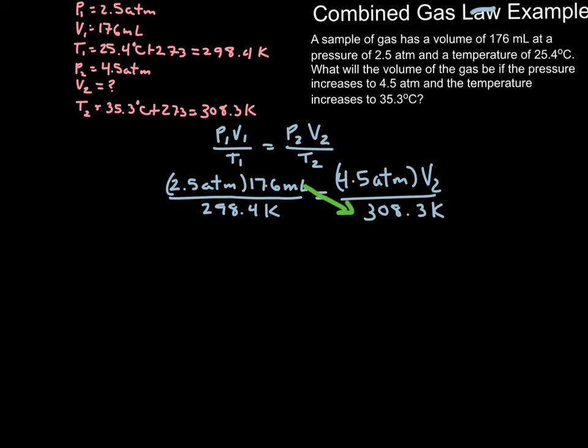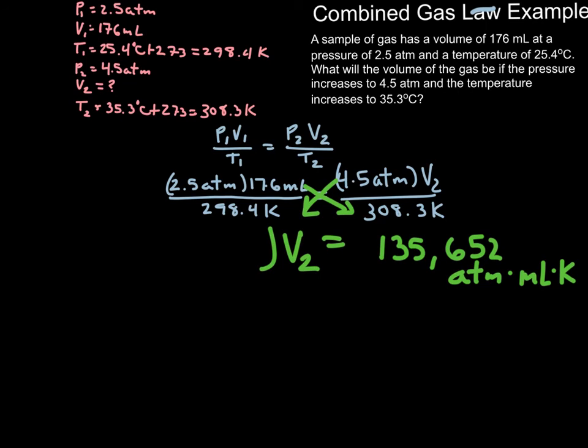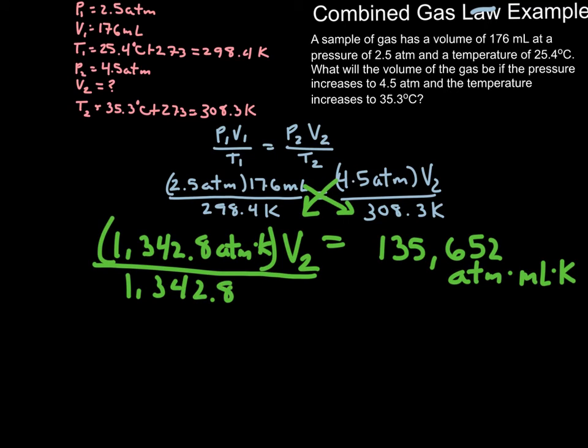So when we cross-multiply here, we get 2.5 atmospheres times 176 milliliters times 308.3 Kelvin, and that is equal to 135,652, but you have to include all of your units. So we're at atmospheres times milliliters times Kelvin. When we cross-multiply the other way, we still have our V2, and 4.5 atmospheres times 298 Kelvin gives us 1,342.8 atmospheres times Kelvin. Now we have to divide by that. 1,342.8 atmospheres times Kelvin, 1,342.8 atmospheres times Kelvin.